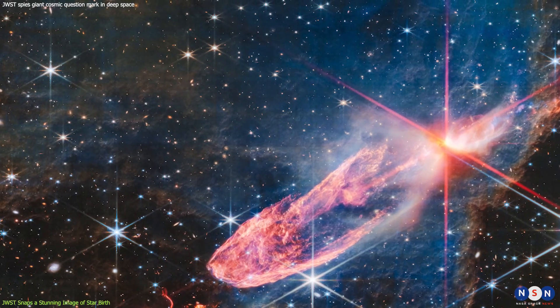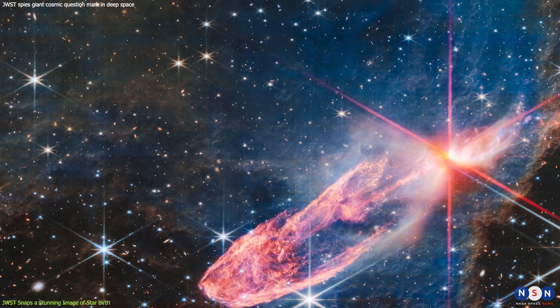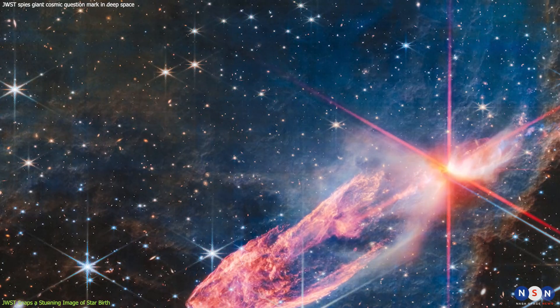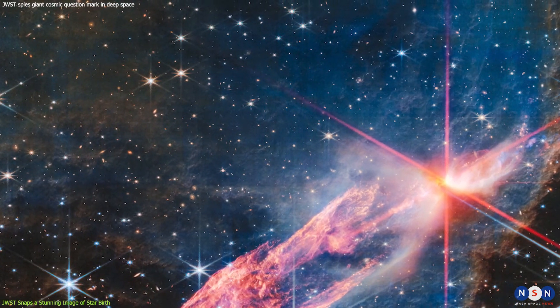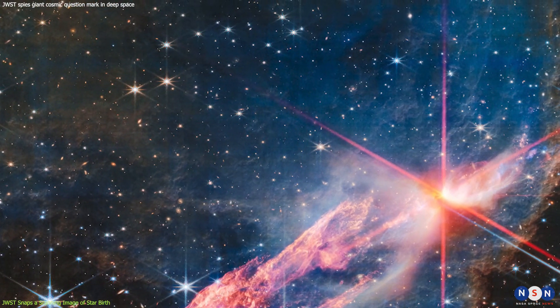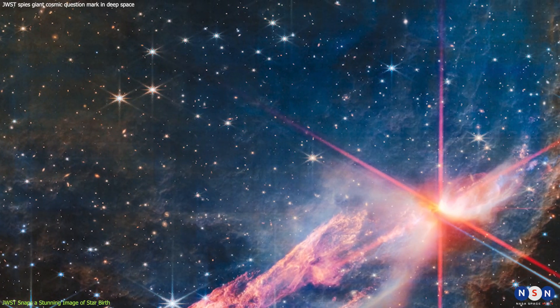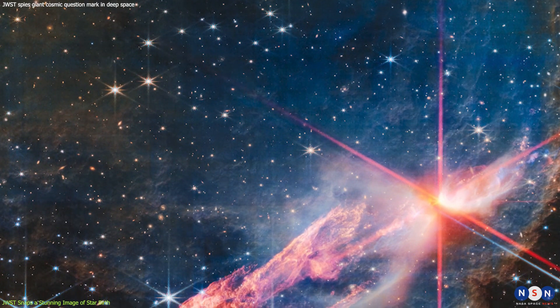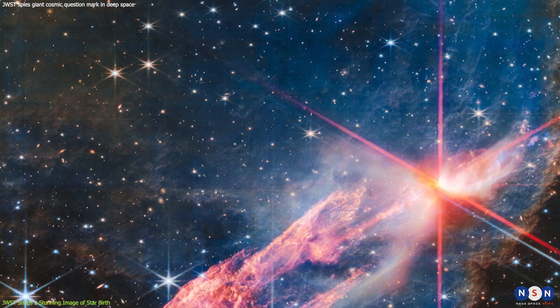Each filter reveals different aspects of the gas and dust around the young stars. For example, the blue filter shows mostly hydrogen gas that is excited by ultraviolet radiation from the stars. The red filter shows mostly sulfur gas that is heated by shock waves from the jets.